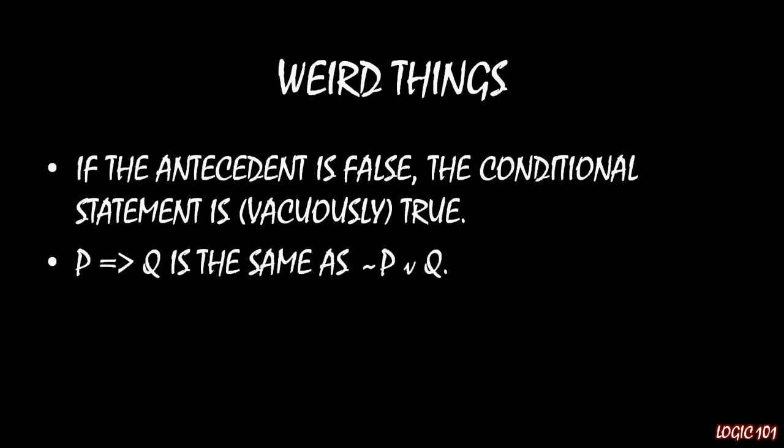One weird thing to note about the implication: if the antecedent is false, then we say that the conditional statement is vacuously true. It will seem really weird at first to think that if the first half of the IF/THEN sentence is false, the conditional expression is still true — I'll explain why in the next unit when we get to truth tables. The other weird thing is that IF P, THEN Q is logically equivalent to the disjunction NOT P or Q. We'll see why that's the case later when we get to replacement rules. So that's the conditional for you — hope you enjoyed this, and I'll see you next time.